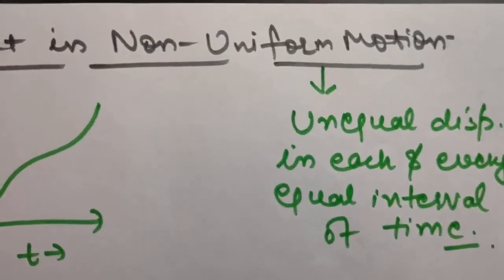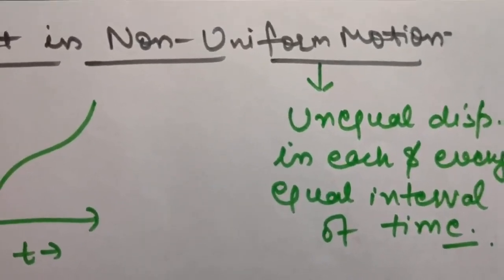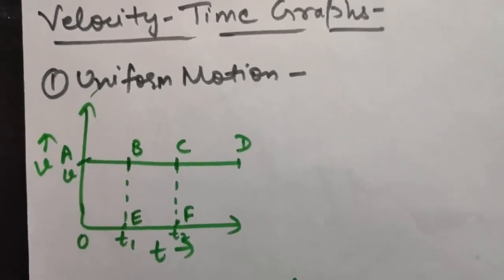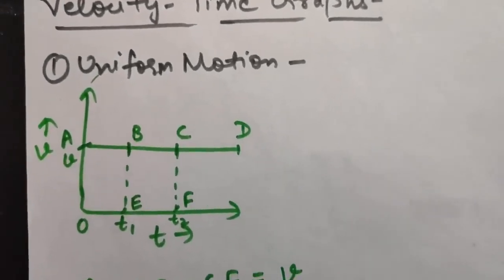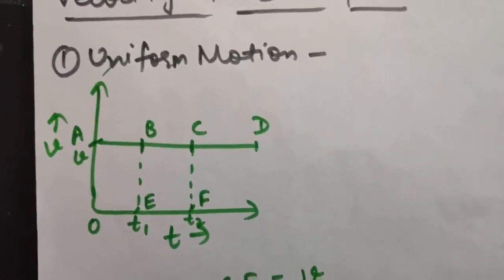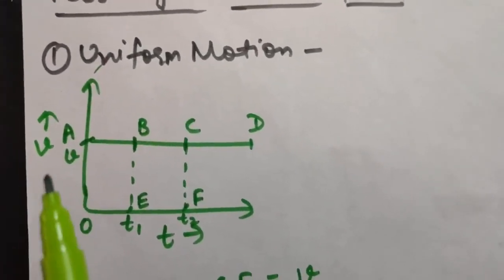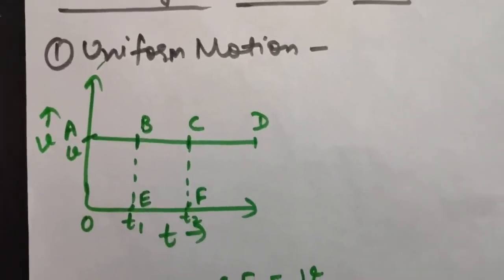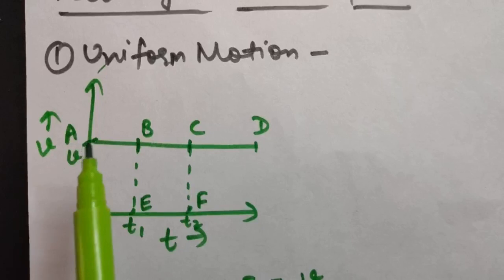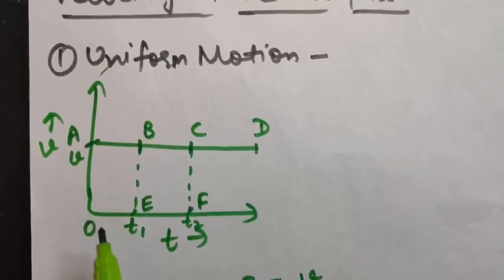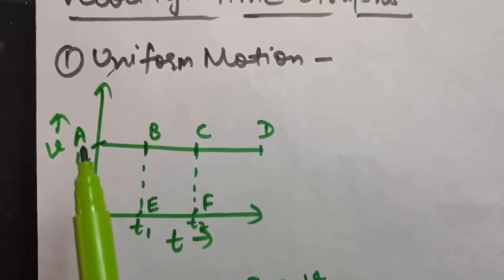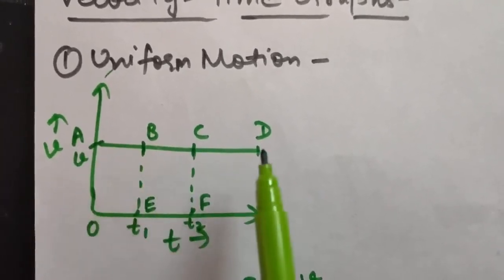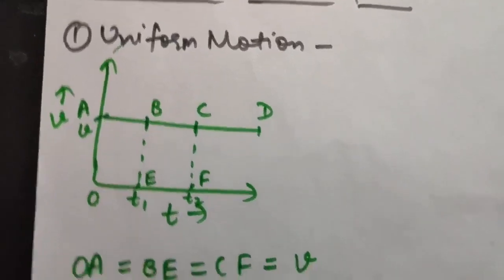Now let us draw a velocity-time graph for uniform motion. Since uniform motion means velocity is constant, at some instant velocity is v, and with increasing time it remains constant. So we get a line parallel to the time axis.